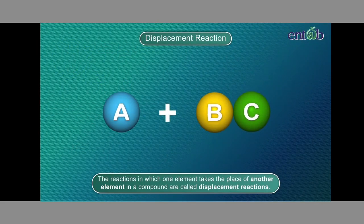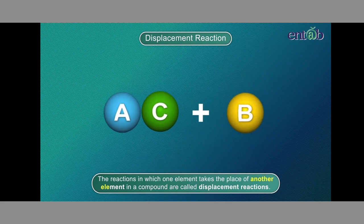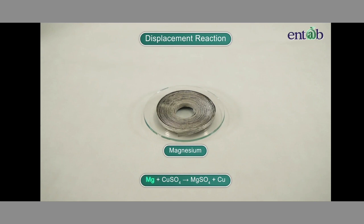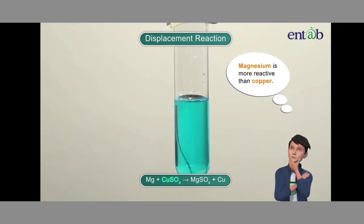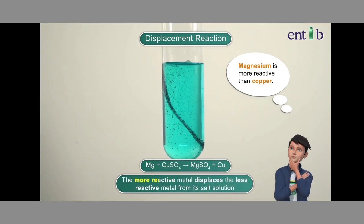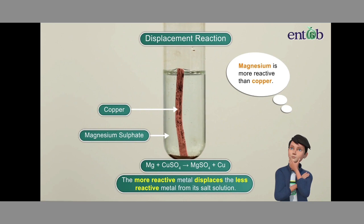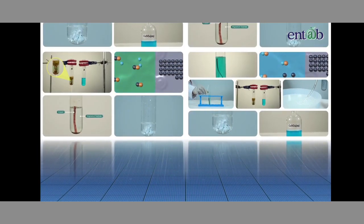You have learned about displacement reactions in previous chapters. The reactions in which one element takes the place of another element in a compound are called displacement reactions. When a more reactive metal is put in the salt solution of a less reactive metal, the more reactive metal displaces the less reactive metal from its salt solution.